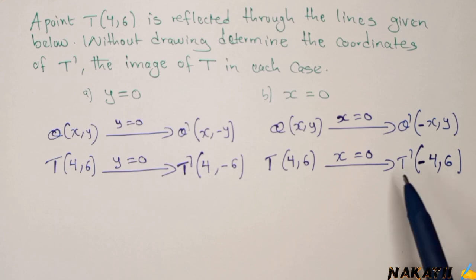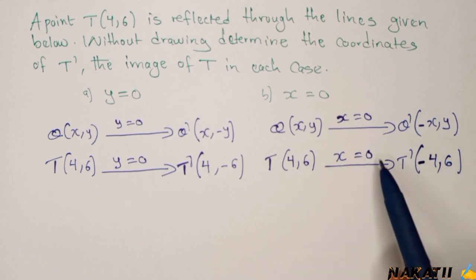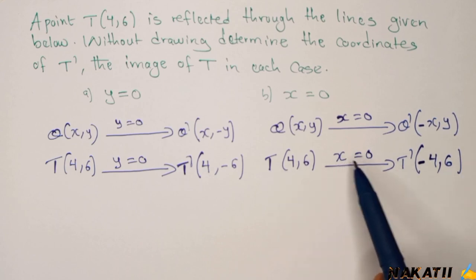So if it is 6, it remains 6. So this one will become the image of T prime, of T, when it is reflected on the line x equals 0 or the y-axis. Thank you. So I'll see you in the next video.